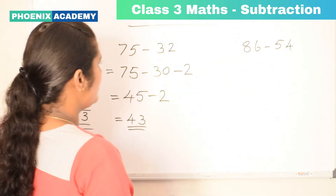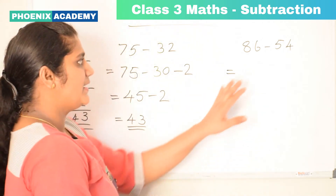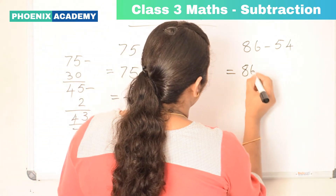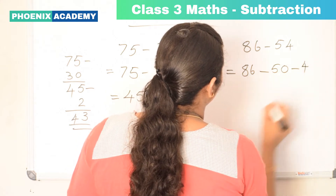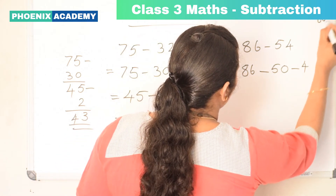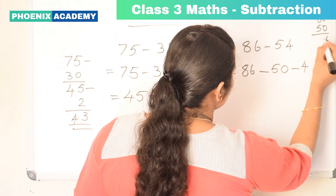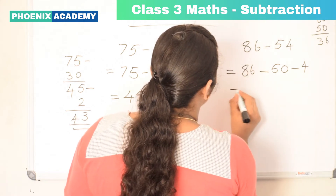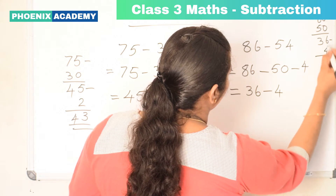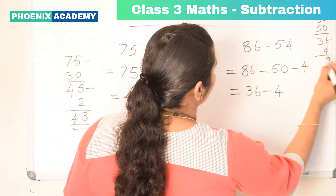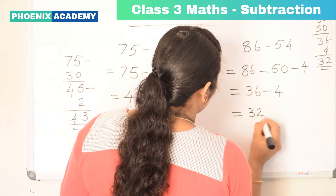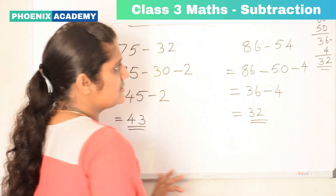Let's do this example also. Let's subtract 50 from 86. 86 minus 50: 6 minus 0 is 6, 8 minus 5 is 3. So 36 minus 4: 6 minus 4 is 2, 3 minus 0 is 3 itself. So the difference is 32.